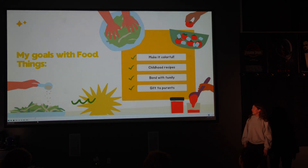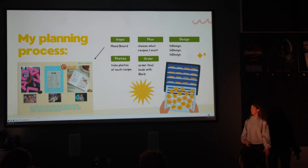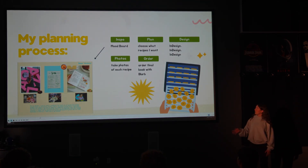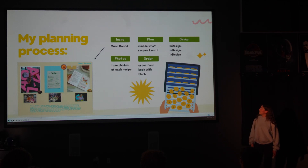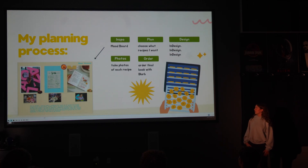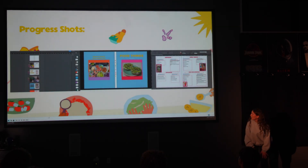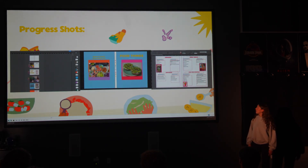I wanted to make something I could pass on to them after I leave college. My planning process included a mood board, choosing the recipes I wanted, using InDesign, taking photos of each recipe, and then finally ordering the final product. This is some progress shots of everything in InDesign.